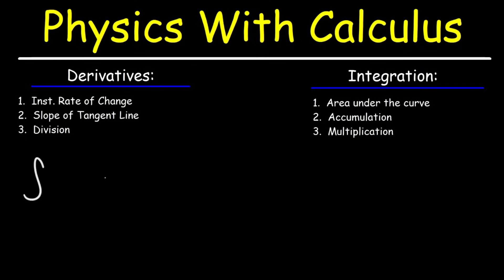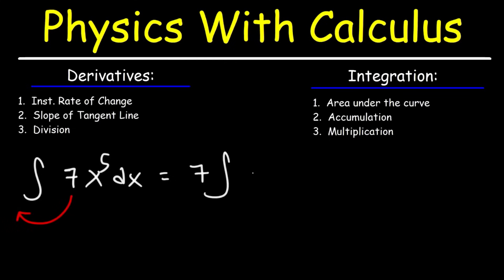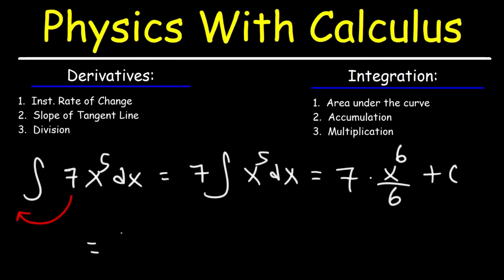Let's find the indefinite integral of 7x to the 5th power. You can take the constant and move it to the front, so this is the same as 7 times the integral of x to the 5th power dx. Using the power rule for integration, the antiderivative of x to the 5th is x to the 6th divided by 6 plus c. So the final answer is 7 over 6 times x to the 6th plus c.